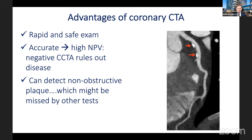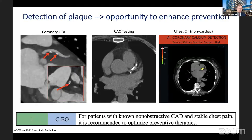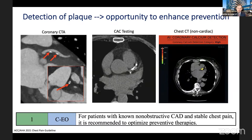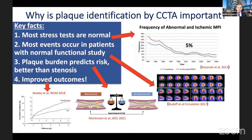The chest pain guideline now includes a Class I indication stating that patients with non-obstructive coronary disease — the type of plaque we used to completely ignore in cardiology — should have optimization of preventive therapies, regardless of how that plaque was detected, whether by coronary CTA, calcium score, or incidental chest CT. This is the first time in any U.S. guideline that plaque is used to categorize coronary artery disease.